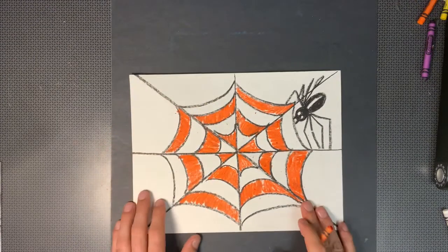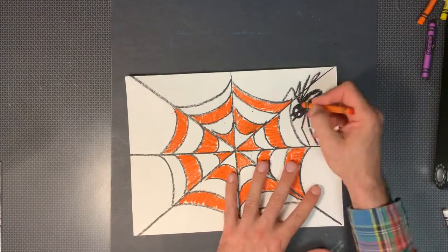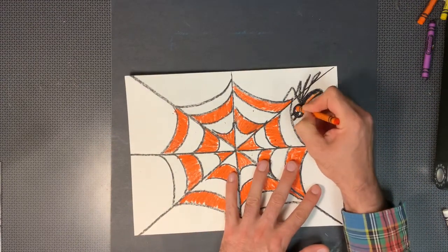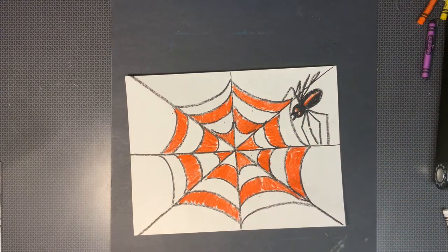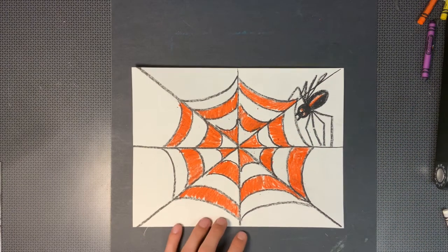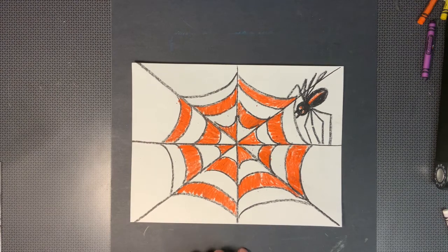Okay look at that, that's interesting. You could even put some orange on your spider if you wanted. And there it is, a radial spider web with a spider.